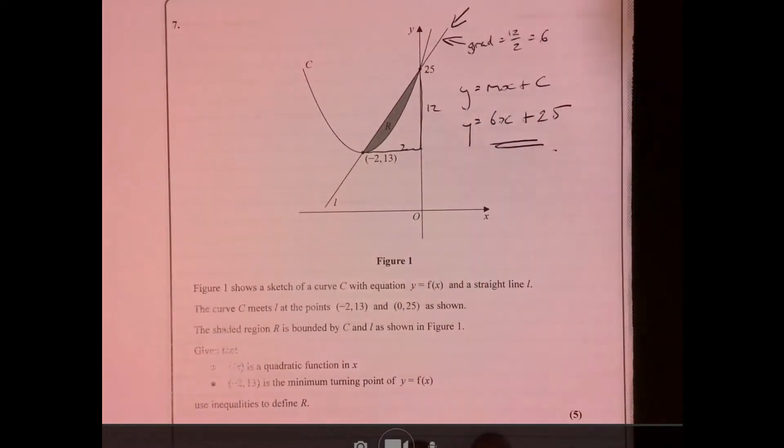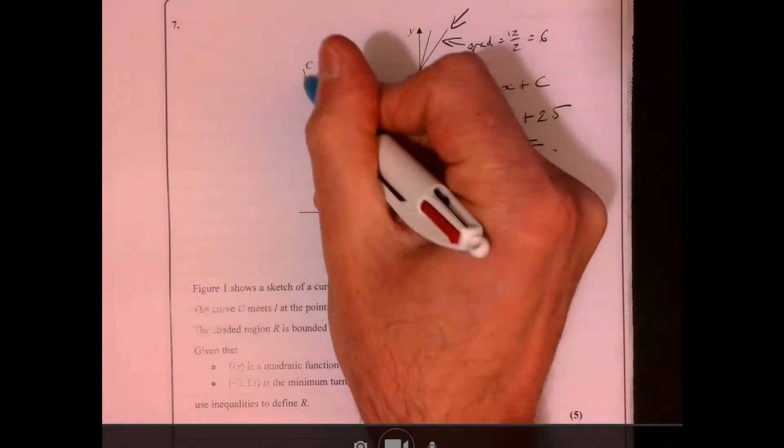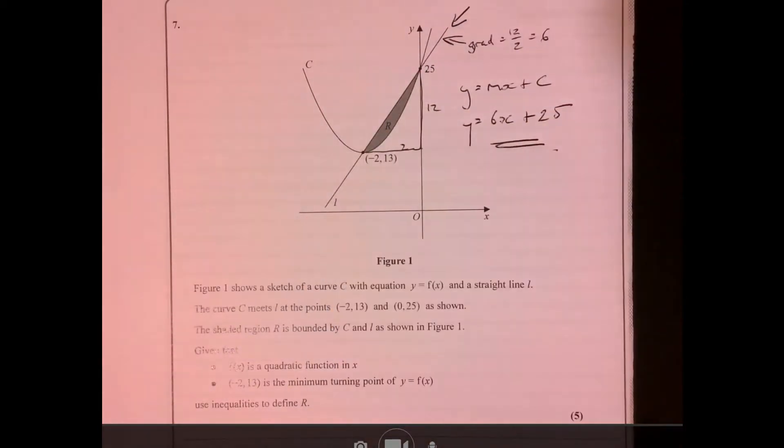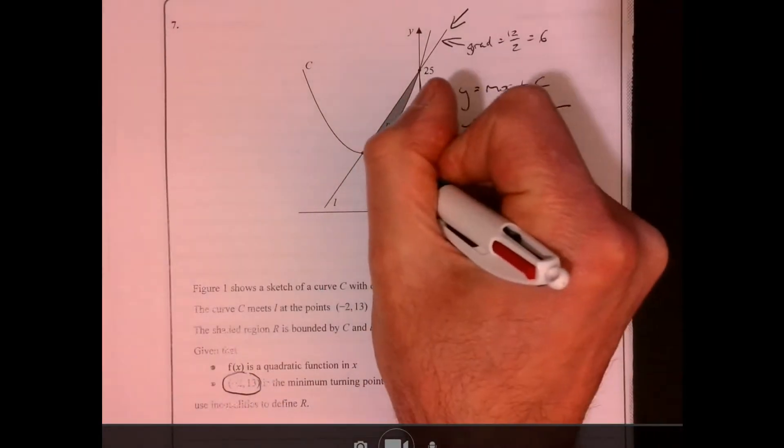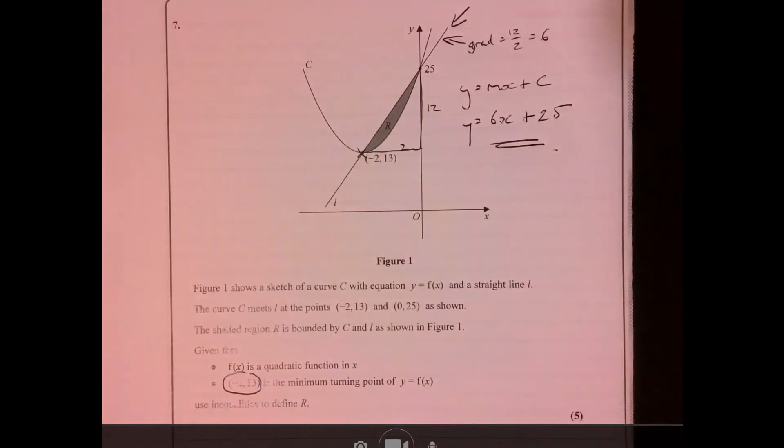Right, now it tells me that this is a quadratic function and it also tells me that the minimum point is this point just here, minus 2, 13.